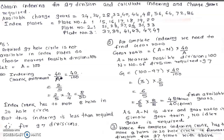Available change gears are: 24 (two gears), 28, 32, 40, 44, 48, 56, 64, 72, and 86. Index plates available are plate number 1, plate number 2, and plate number 3.